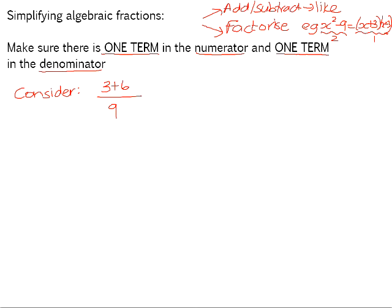So there might be some of you out there who are tempted to say, right, 3 goes into itself once, 3 goes into 9 three times. 3 goes into itself once, 3 goes into 6 twice. That leaves us with 1 plus 2, which is 3 over 1. Now that doesn't really make any sense because if we go back to the original fraction,